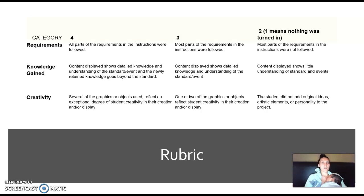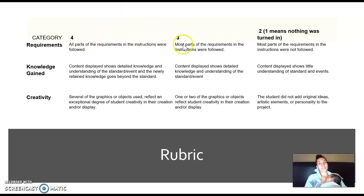There is a rubric — it's not just going to be turn it in and get a 100. The biggest things you have to earn points on are the requirements. In the resource guide there are requirements listed in each activity. You have to do all of those to get a four. You'd get a three if you're missing parts, a two if most parts are not there, and a one means you just didn't turn anything in.